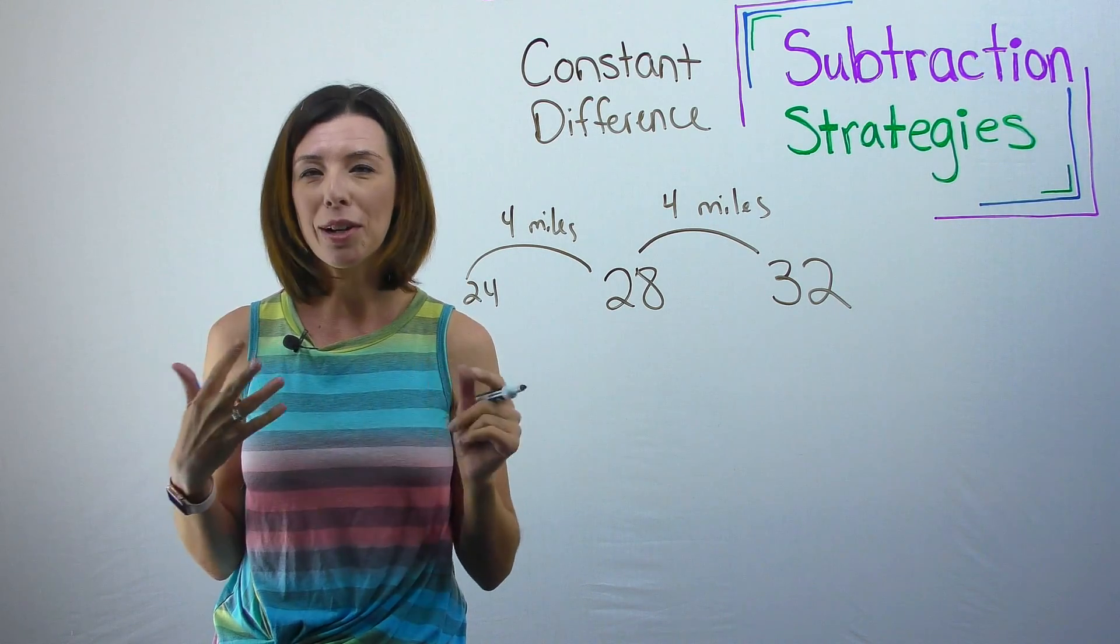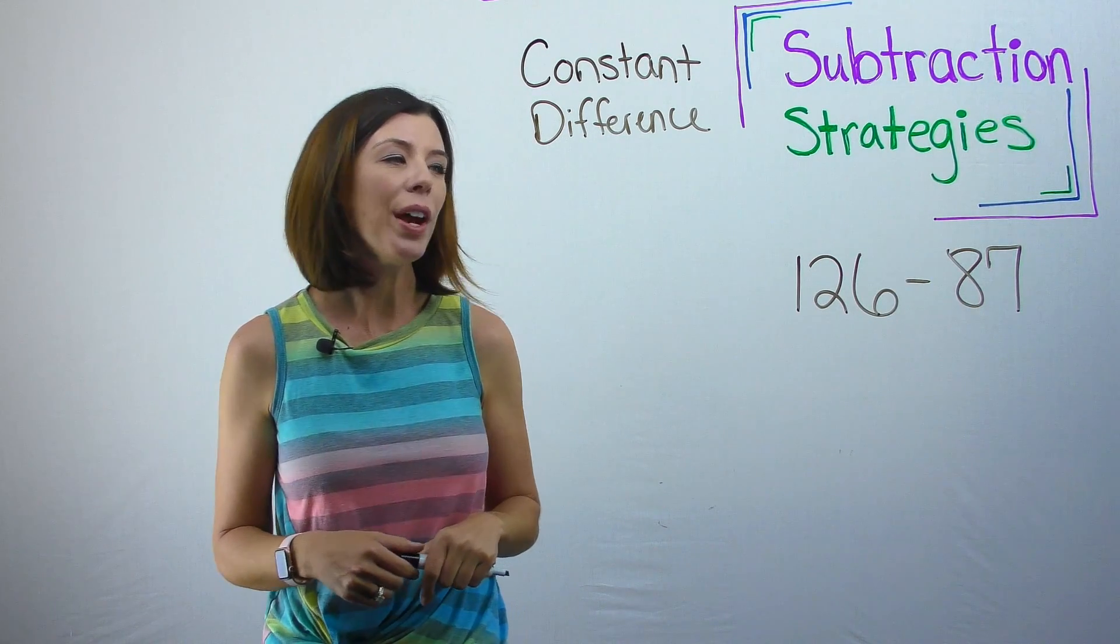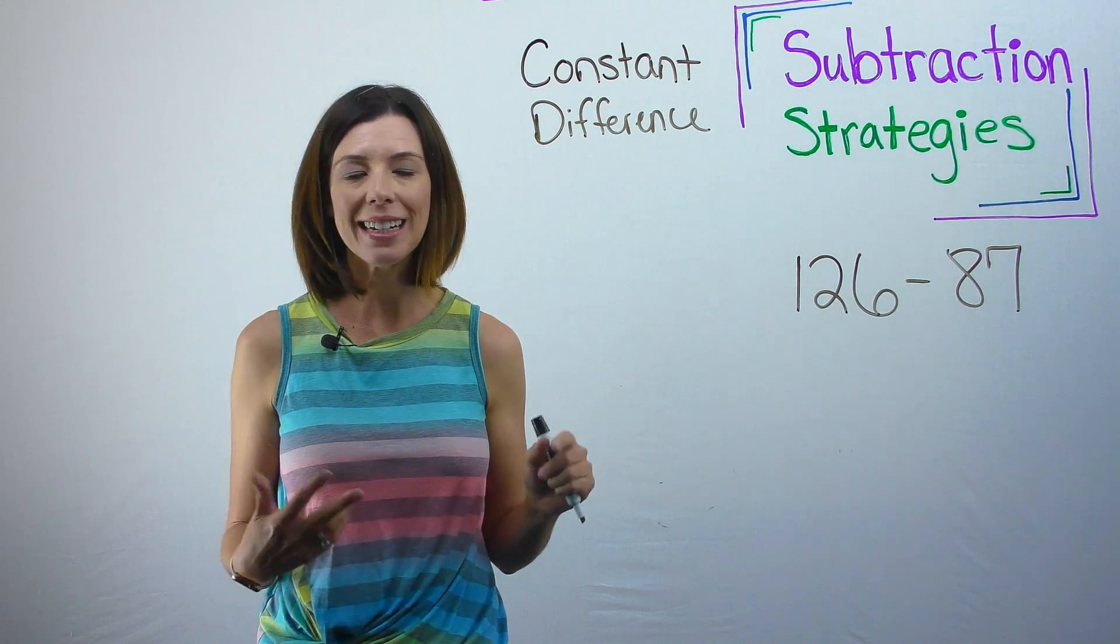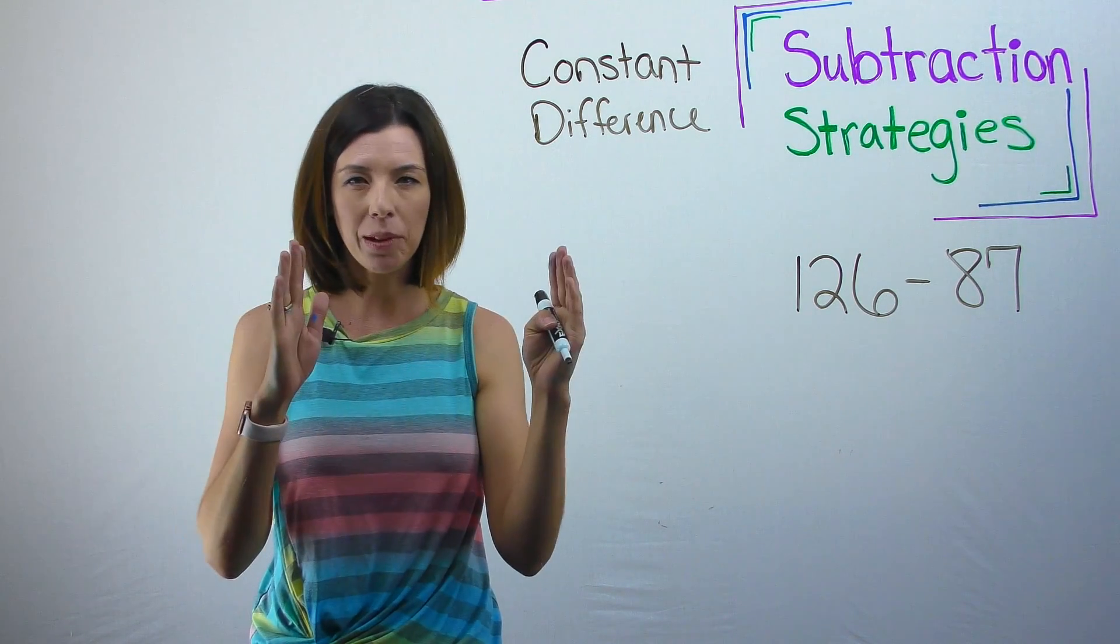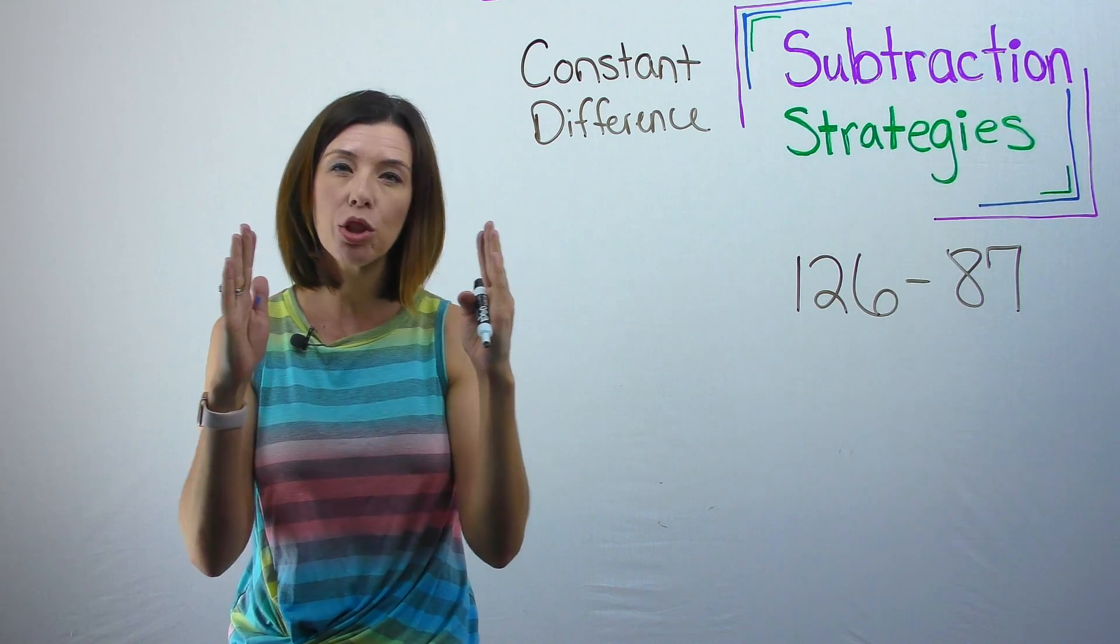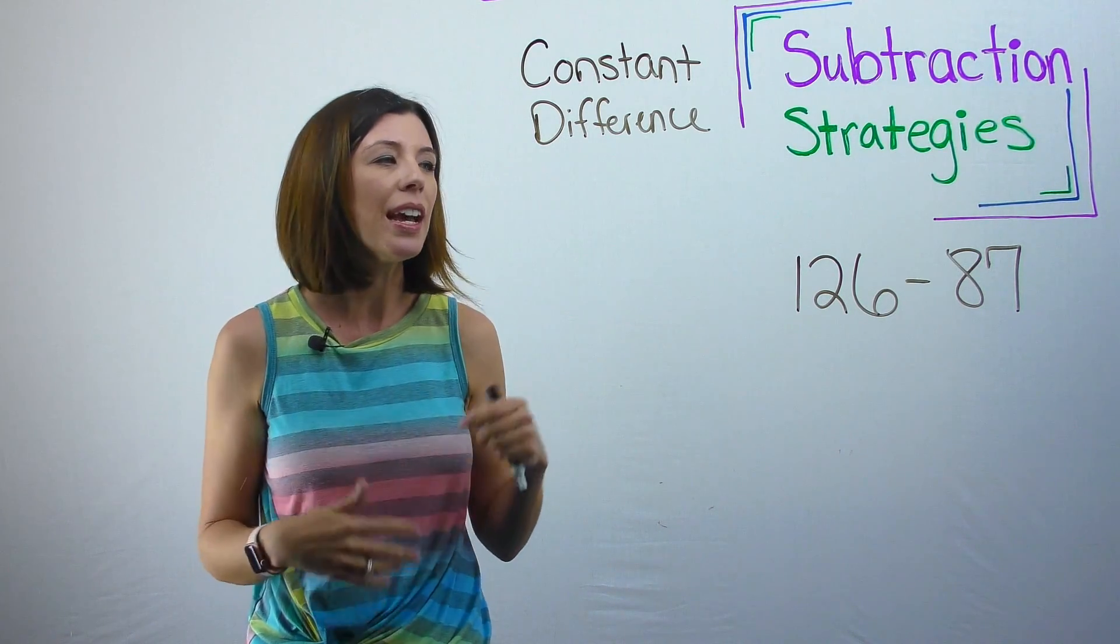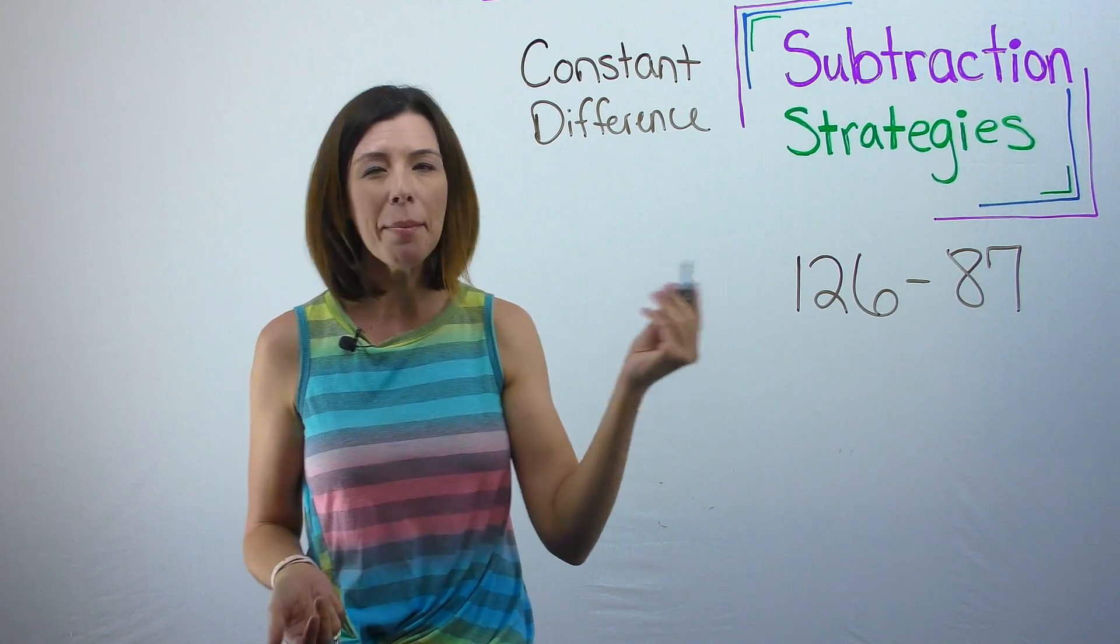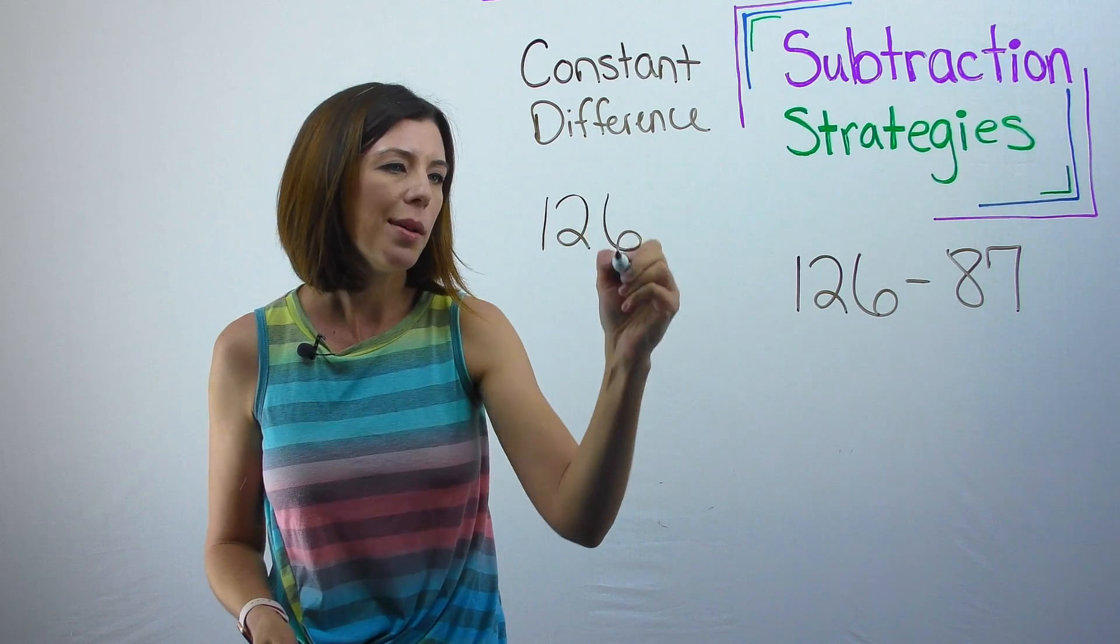Now let's try this with a subtraction problem and I'll show you what I mean. So now I've got on the board 126 minus 87. Again, we're thinking about if we shift the number line or if these are two mile marker stations and we're just shifting them but maintaining that same distance between. So what I'm going to do is I'm going to actually write this vertically because I think it's easier for me to see.